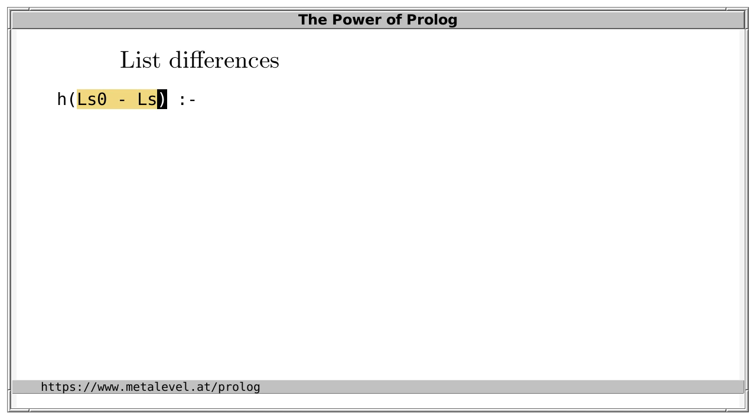The fact that these arguments belong together logically because they describe a list difference doesn't mean you have to physically merge them into a single term. For these reasons, we use two arguments. In this clause, we can use other predicates to describe the list difference. For example, we can plug in our predicates P, Q and R, if we assume, as we did, that they also describe list differences.